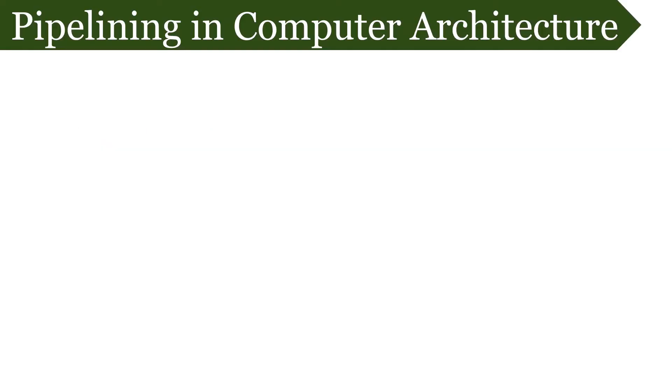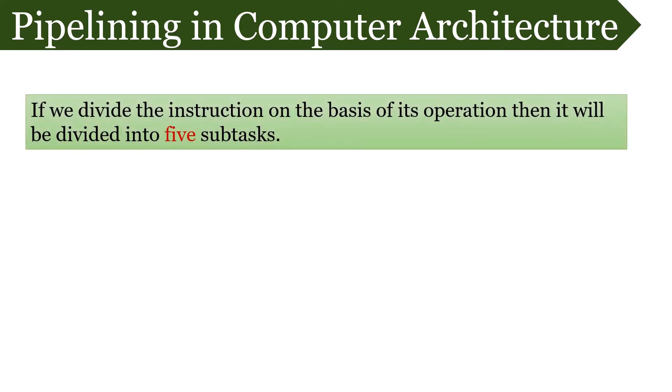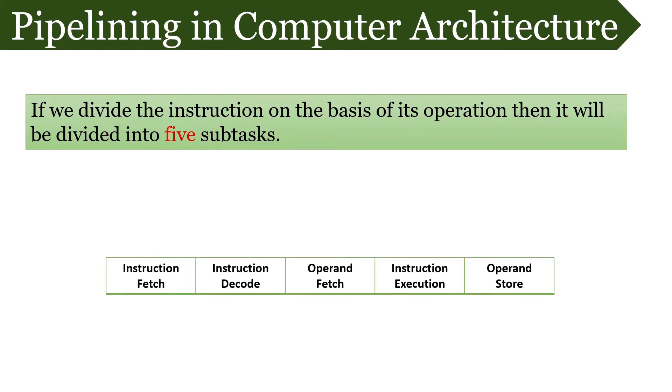Now let us apply the concept of pipelining in computer. Here an instruction can be divided into 5 subtasks on the basis of operation they perform. That is instruction fetch, instruction decode, operand fetch, instruction execution and last operand store.